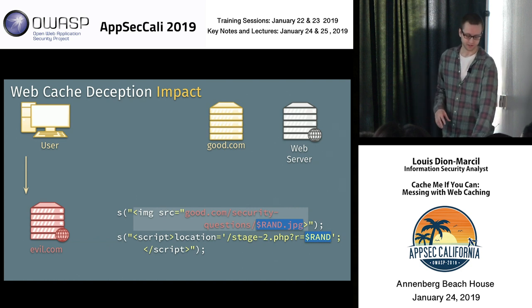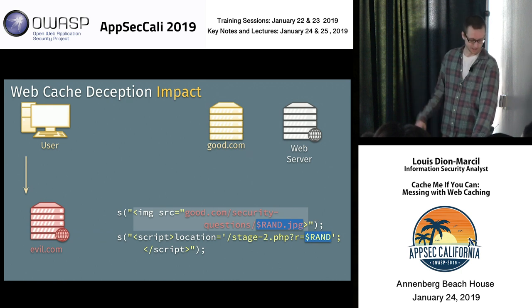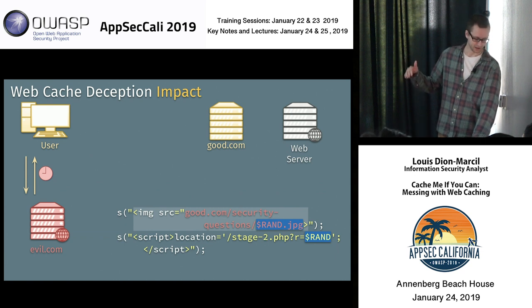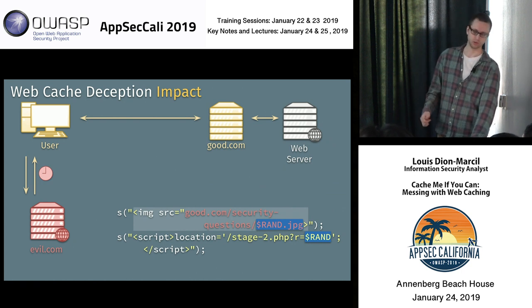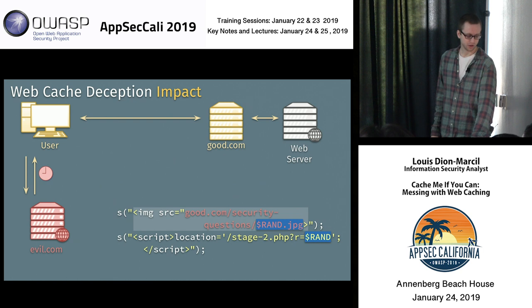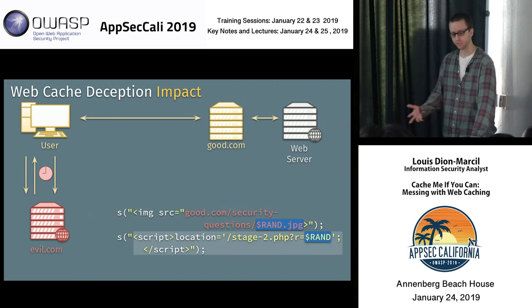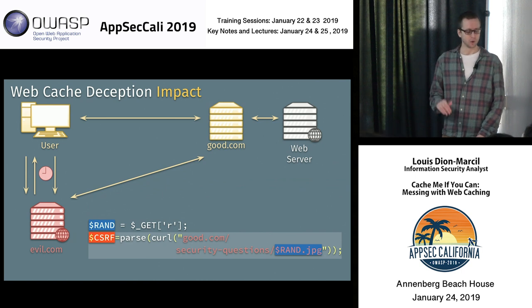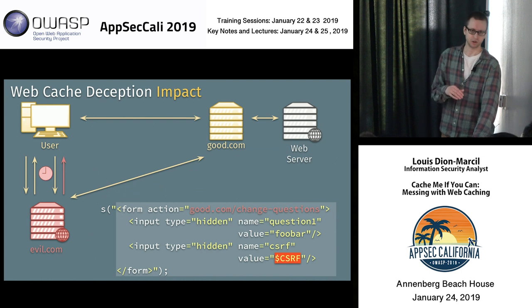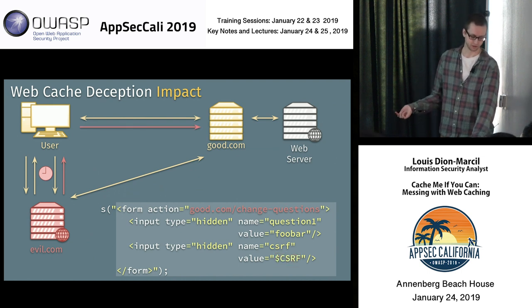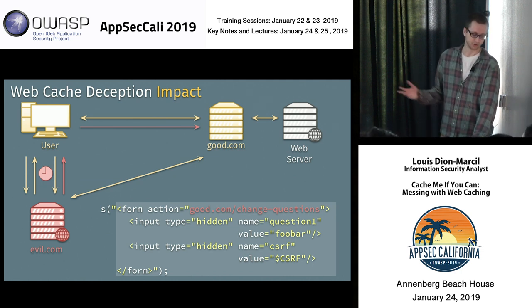To illustrate: the user reaches our evil.com attacker server, which sends back an image tag and script tag. The user gets their information cached. Then you tell the user to reach you on a second page, giving you time to go fetch their CSRF tokens from the cache server. You send the CSRF attack back to the user, forcing their browser to change their security questions. That's the web cache deception exploit — applicable on any vulnerable server.